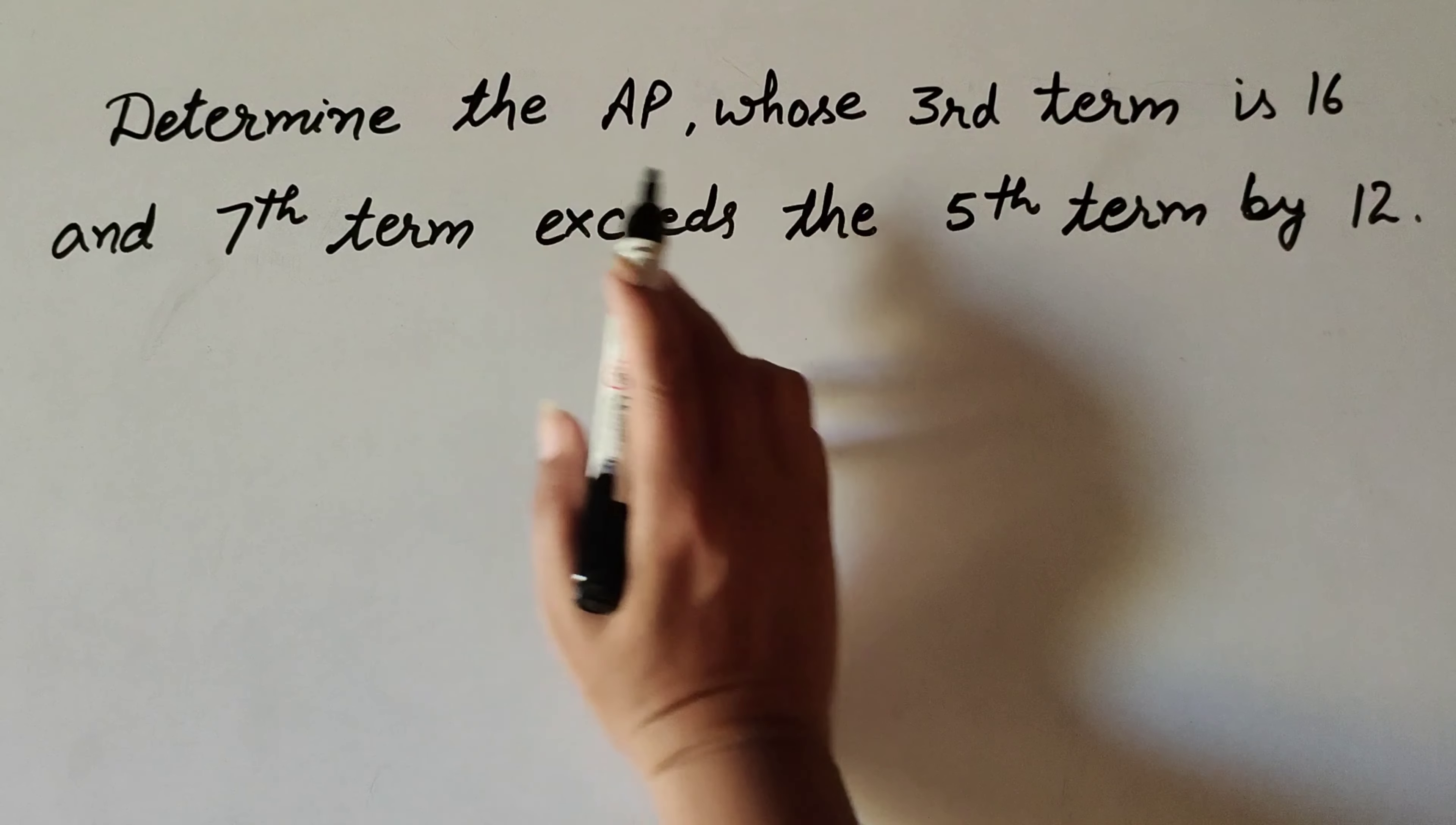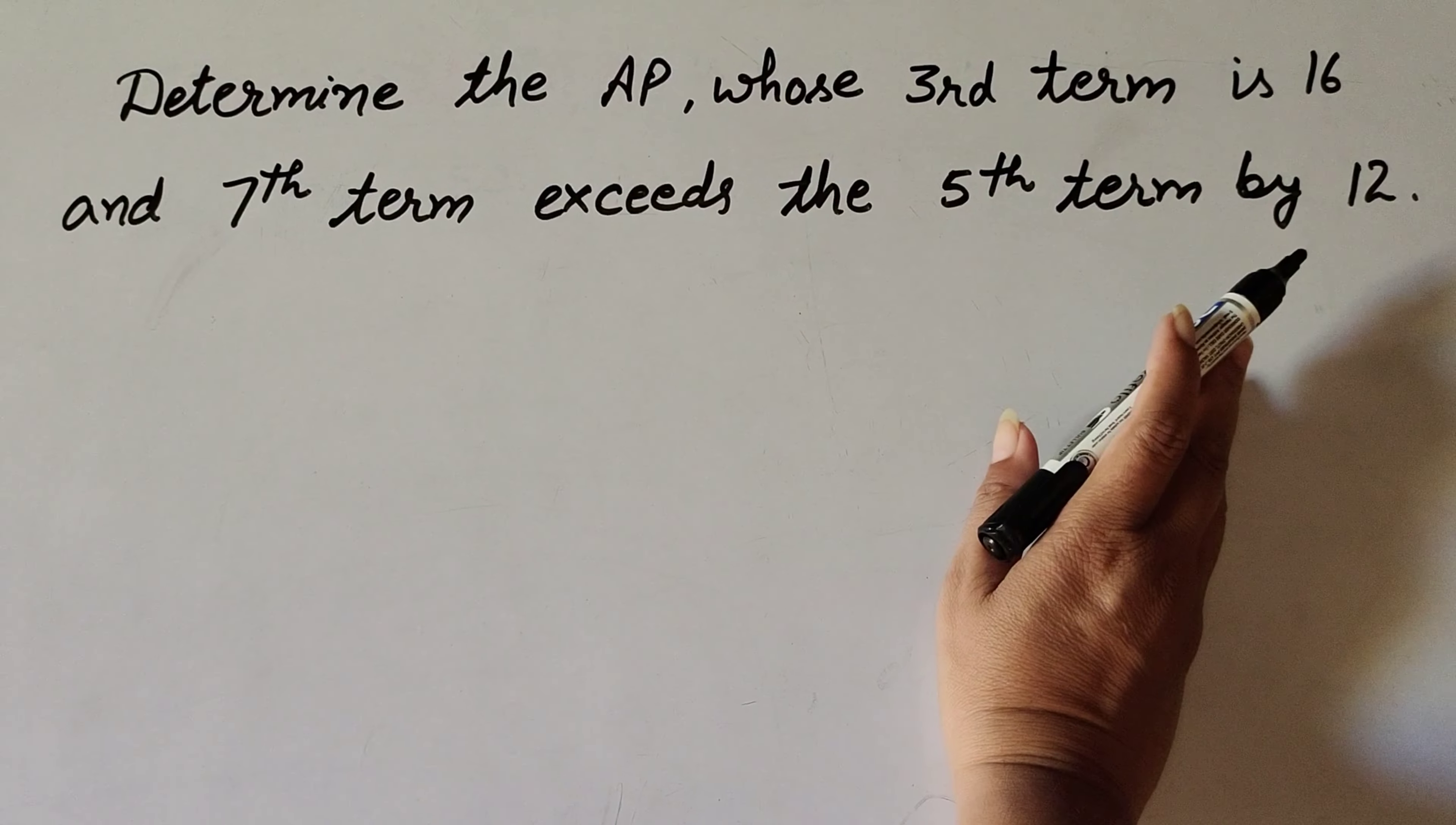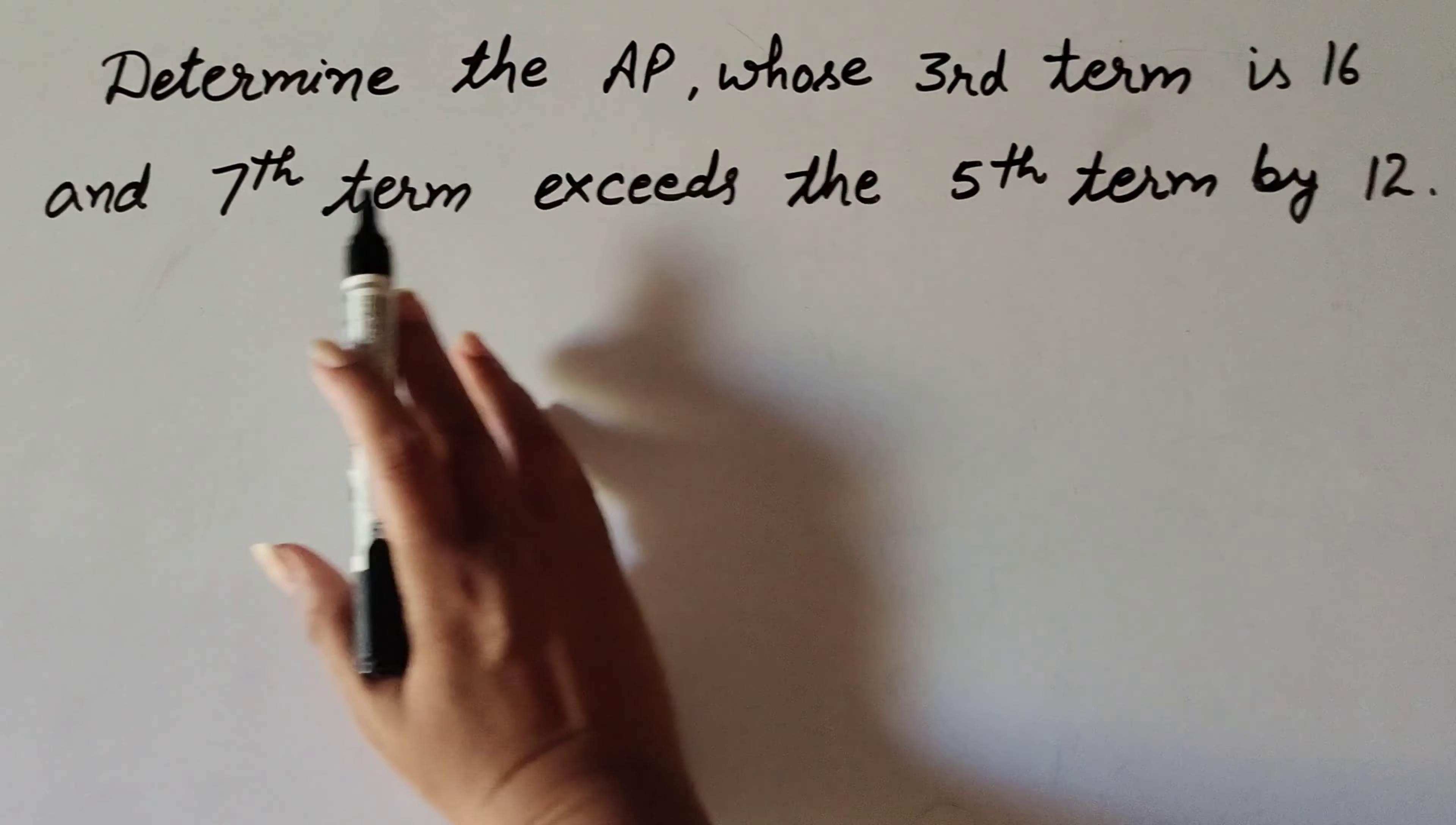In this video we discuss: determine the AP whose 3rd term is 16 and 7th term exceeds the 5th term by 12. We need to find the AP series whose 3rd term is given, and 7th term exceeds the 5th term by 12.